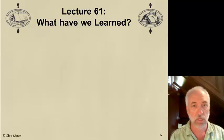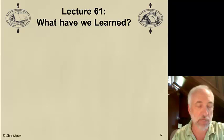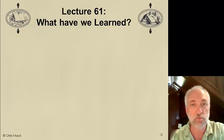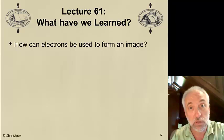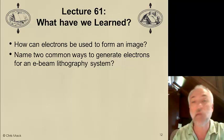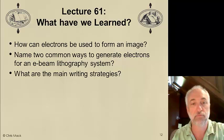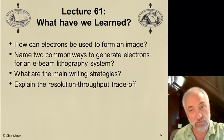In lecture 61, our first lecture on e-beam lithography, you should be able to answer these questions: How can electrons be used to form an image? Name two common ways to generate electrons for an e-beam lithography system. What are the main writing strategies used in e-beam lithography? And explain the resolution-throughput trade-off. Next time we'll talk about electron-material interactions, scattering that occurs, and photoresists and how they work in e-beam lithography.